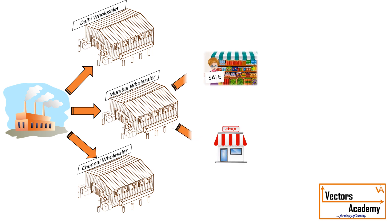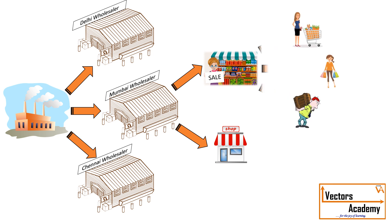The retailers are the ones who buy the product from the wholesaler in small quantities. The shopkeeper then sells the product to the end customers. So once you understand the supply chain, let us understand how pricing works at different stages.